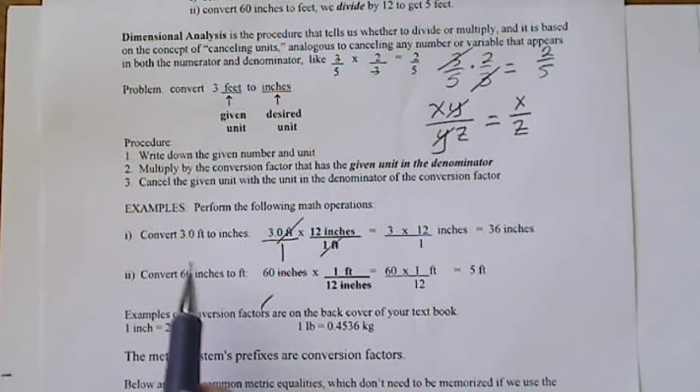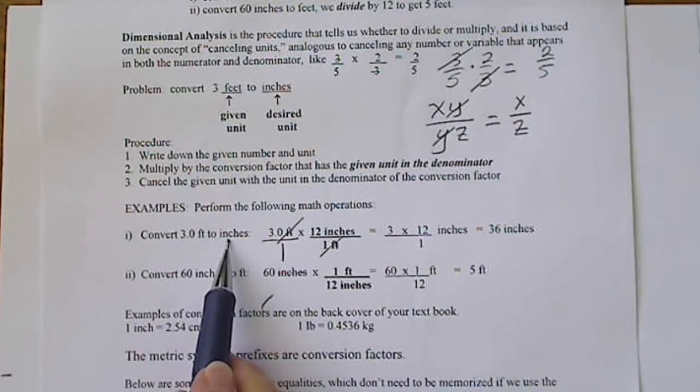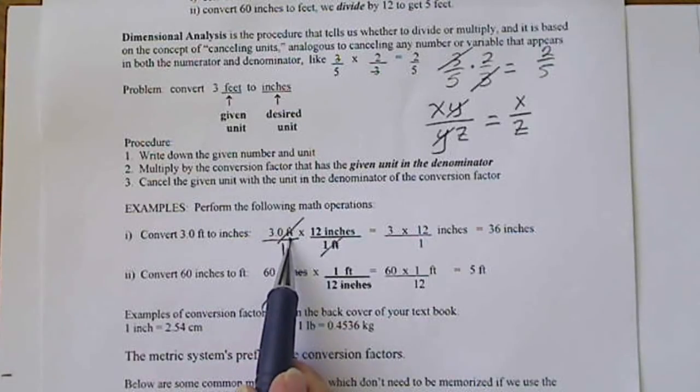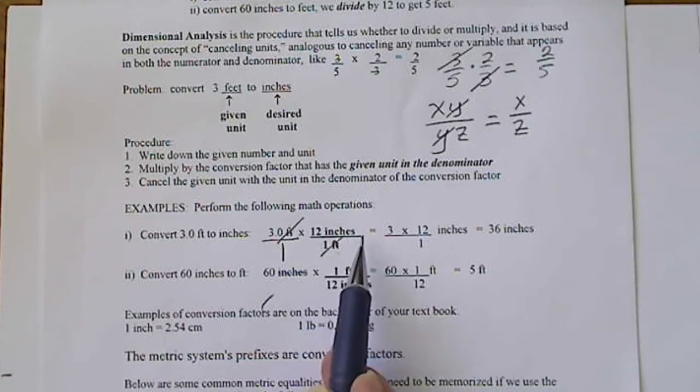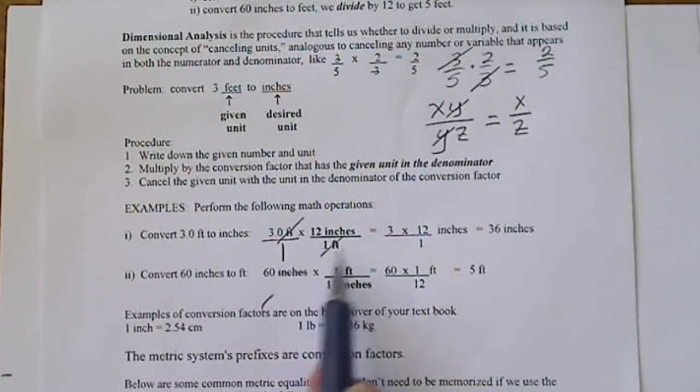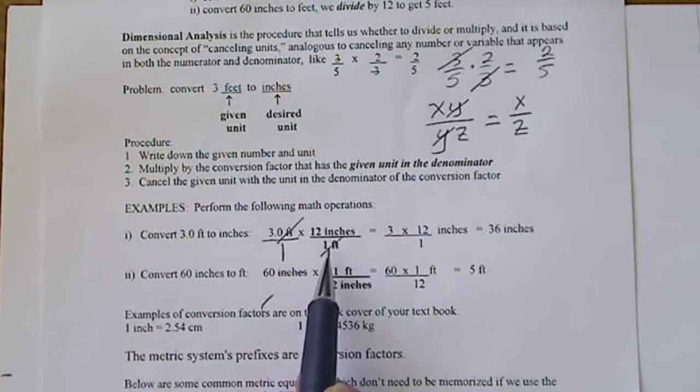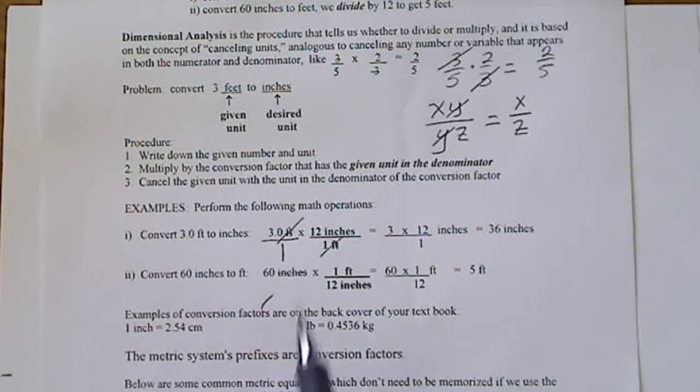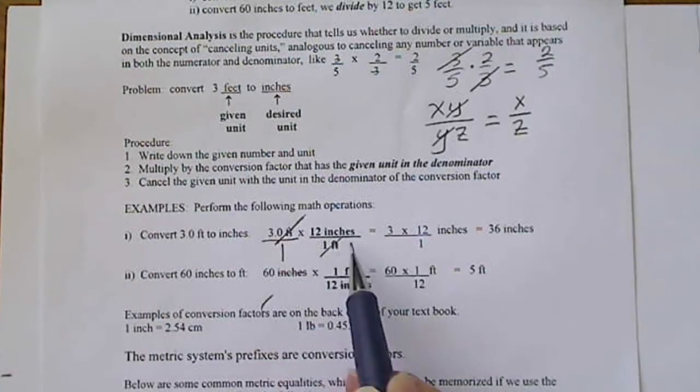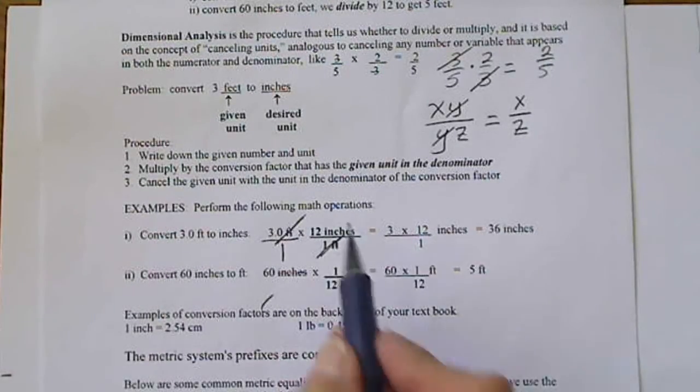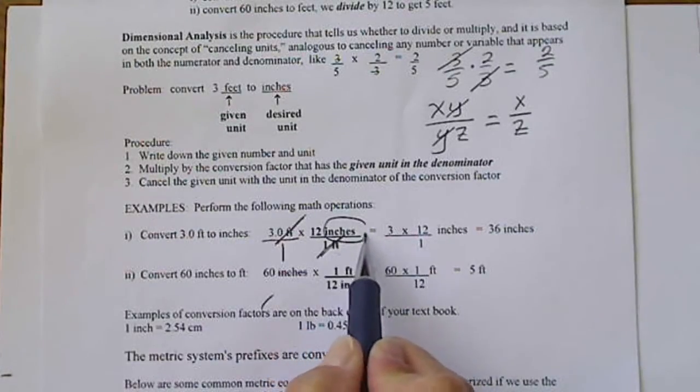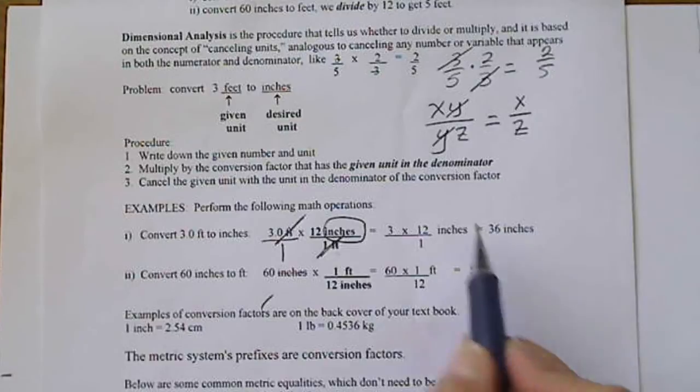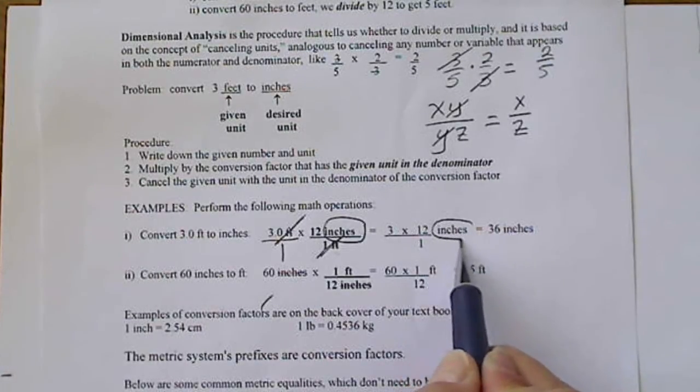For example, converting 3 feet to inches, we start with 3 feet. The word feet is going to cancel, so we're going to put feet in the denominator. In this case we can go from feet to inches because we know that 12 inches is one foot. Picking up your pencil and drawing through that and actually canceling those units is very helpful.